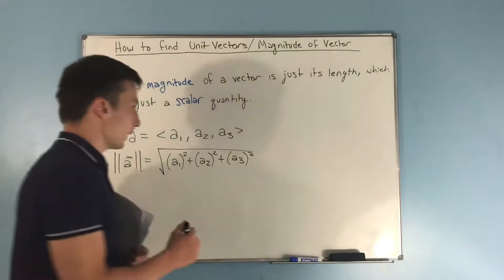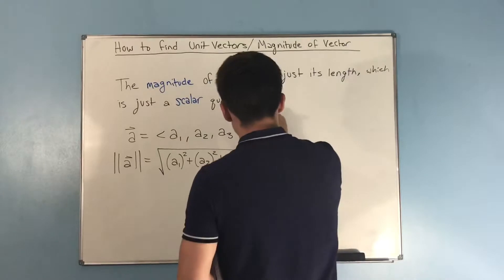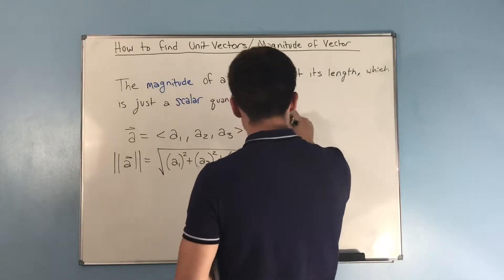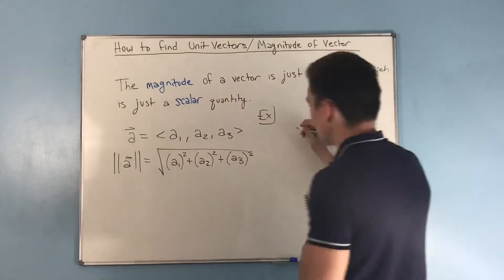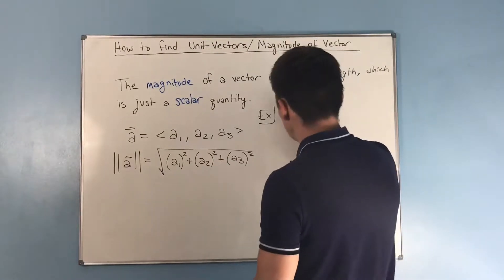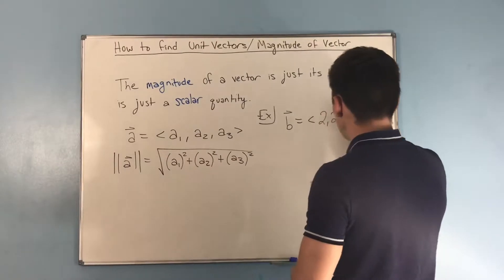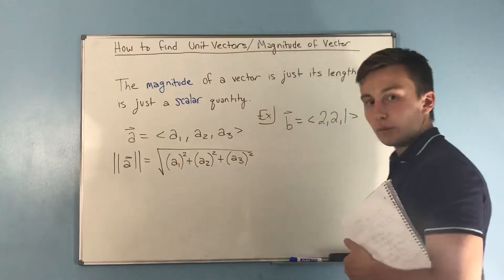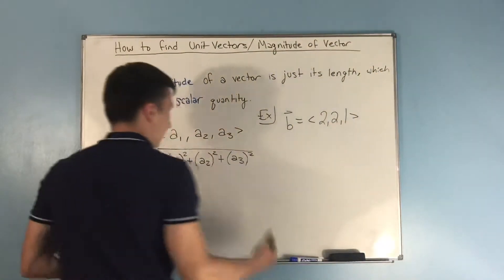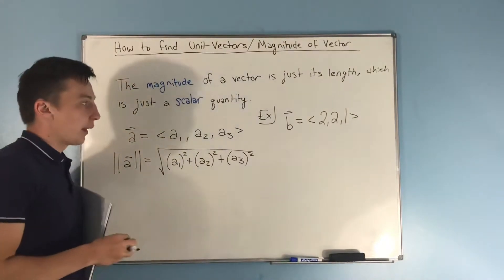So let's do an example here. Let's say that we have vector b, and b is represented by 2, 2, and 1.